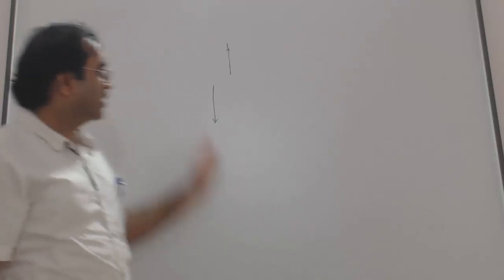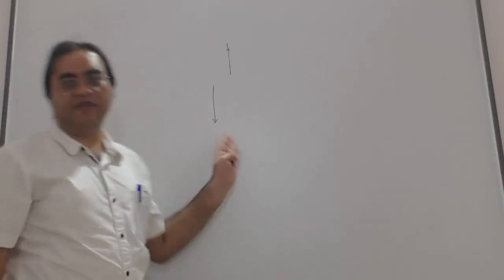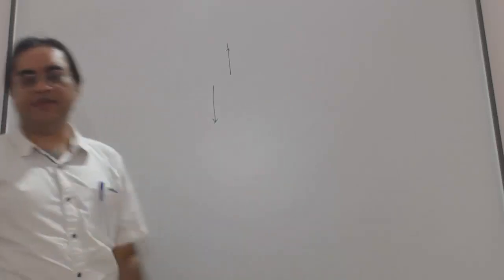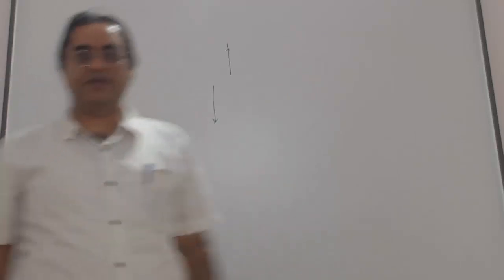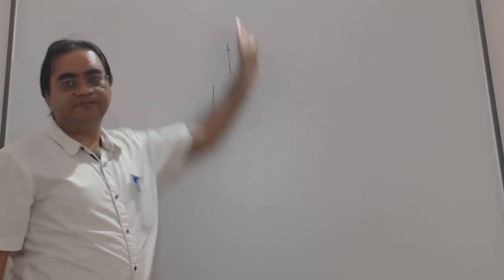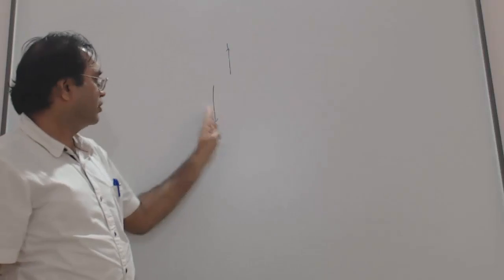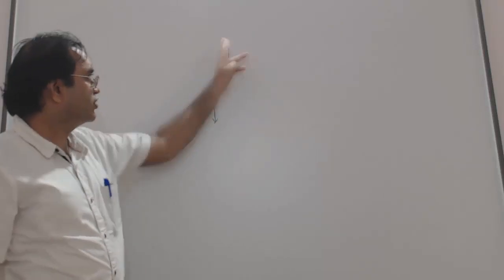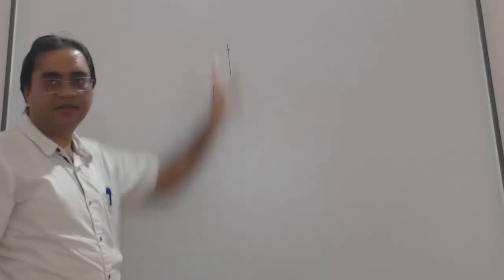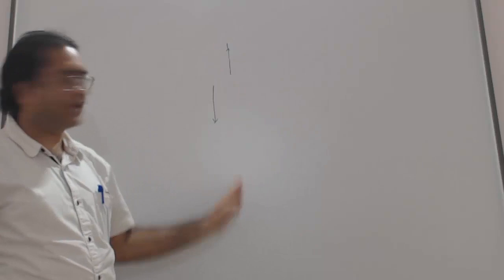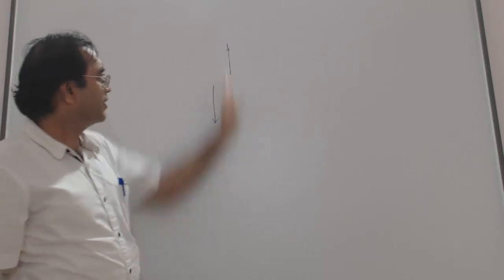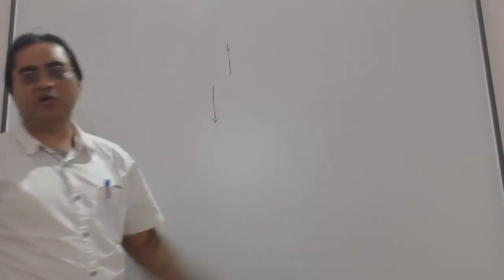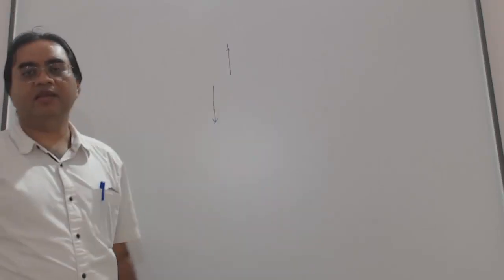This is only possible if the center of mass of the L system is aligned with the tension. So the center of mass is here, and these two — tension and mg — are in the same line. In that case we can have rotational equilibrium.